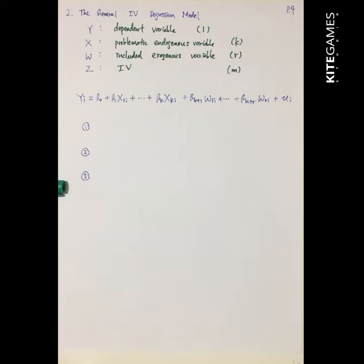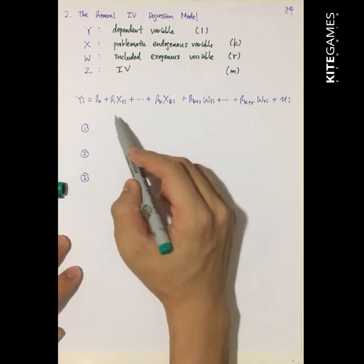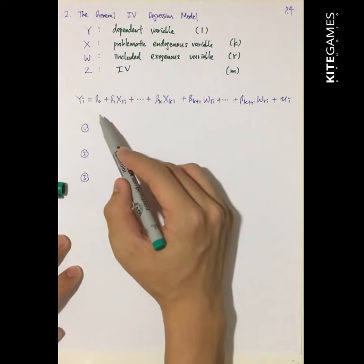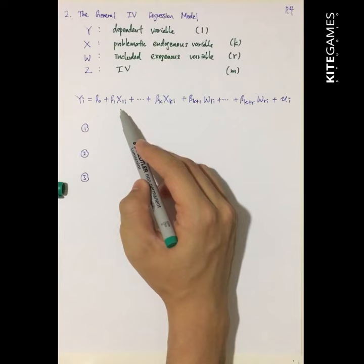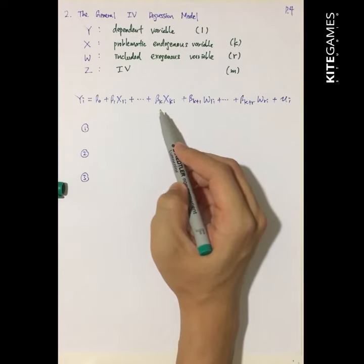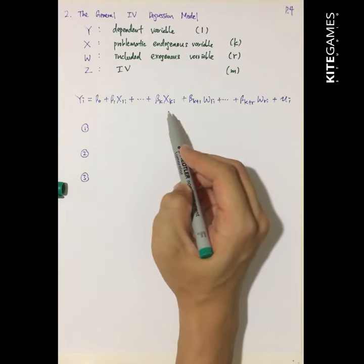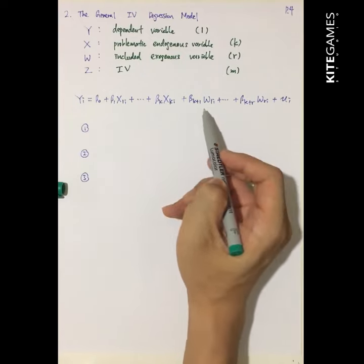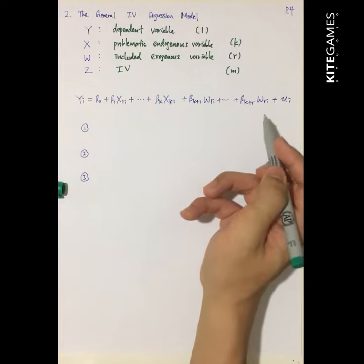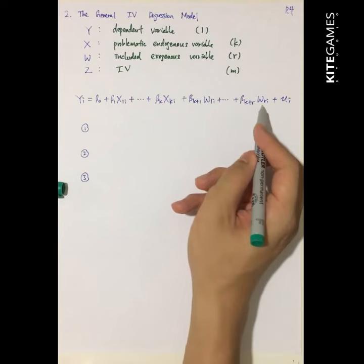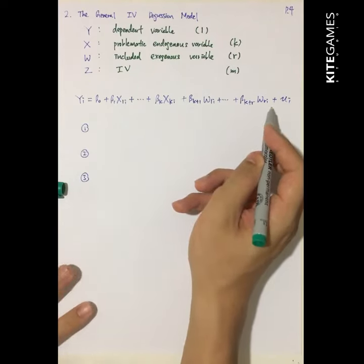So we can construct a regression model of this form: y_i equals beta_0 plus beta_1 x_1i plus up to beta_k x_ki, then plus beta_{k+1} for the included exogenous variables, up to beta_{k+r} w_ri, then plus the error term.